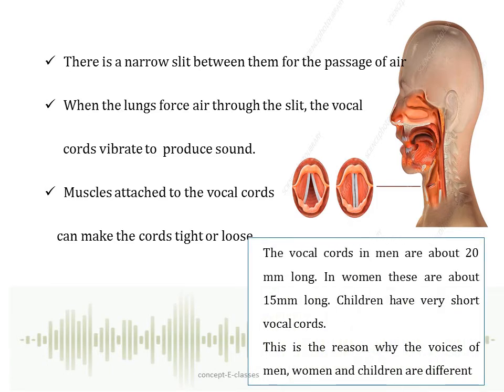The vocal cords in men are about 20 mm long and in women they are about 15 mm long. Children have very short vocal cords. As men have much longer vocal cords, they have a heavy voice, whereas children and women have a shrill voice due to shorter vocal cords. This is the reason why the voices of men, women and children are different.